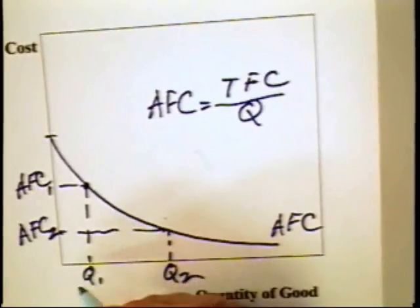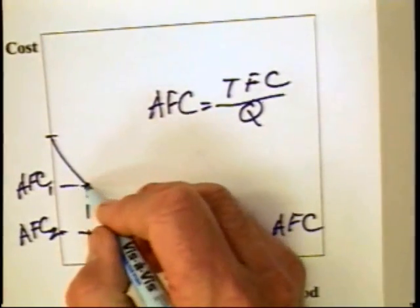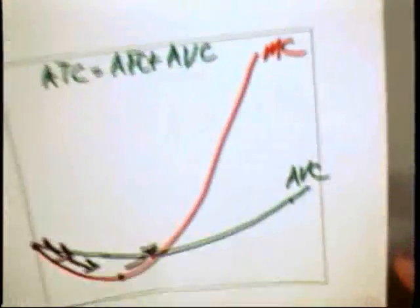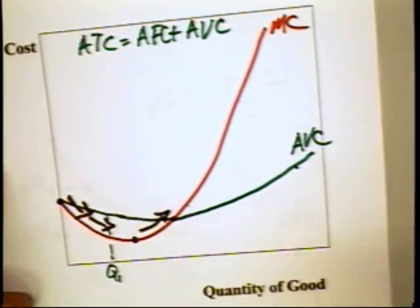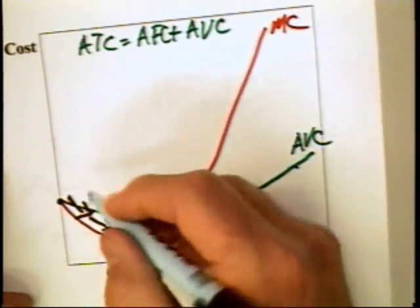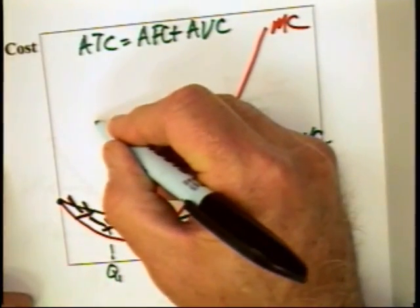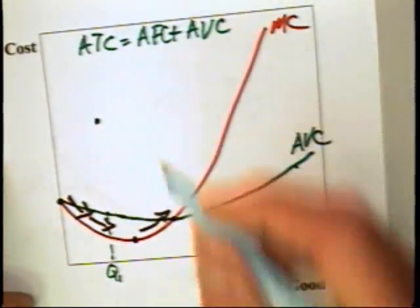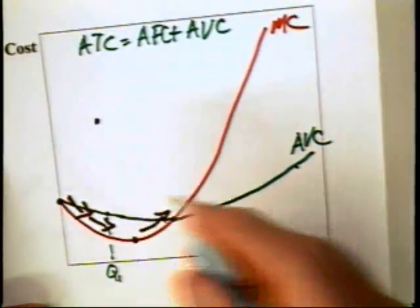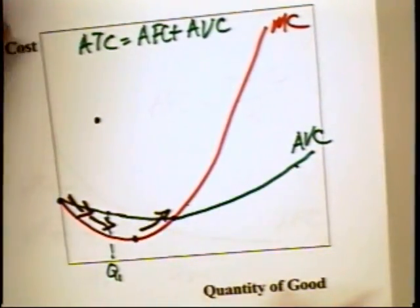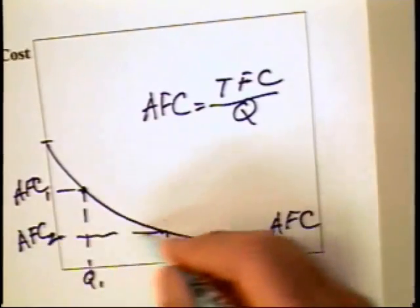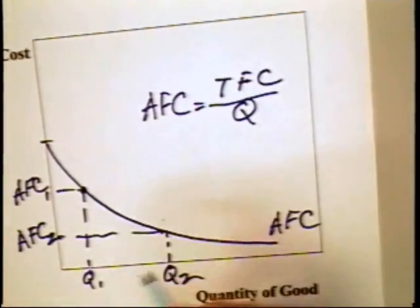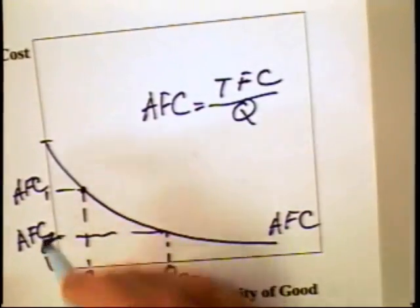For a quantity of Q1, we get an average variable cost there. Well, we can plot that here, quantity Q1, and that's the average variable cost. But we tack on the average fixed cost, which is something like this. We note from the other graph that the average fixed cost at quantity Q2 is about that much.